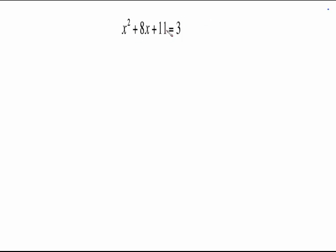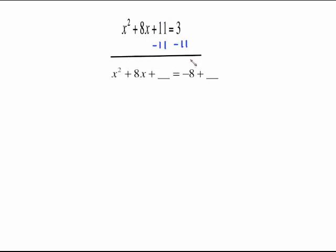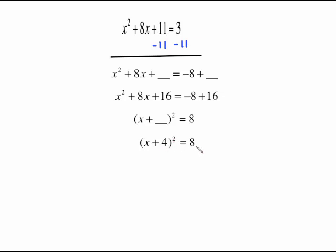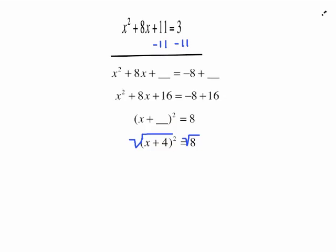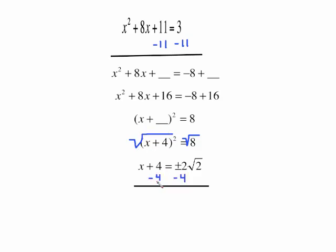This is definitely not a perfect square trinomial. You have positive 11 at the end, so get rid of it by subtracting 11 from both sides, giving negative 8 on the right. Now: x squared plus 8x plus blank equals negative 8 plus blank. Half of 8 is 4, and 4 squared is 16, so add 16 to both sides. Simple arithmetic: negative 8 plus 16 is 8. We squared 4 to get 16, so this is x plus 4 squared equals 8. Take the square root of both sides. Square root of 8 breaks into 2 times 2 times 2 — pair of 2's comes out, giving plus or minus 2 radical 2. Subtract 4 from both sides for the final answer: negative 4 plus or minus 2 radical 2. You have two answers: negative 4 plus the radical and negative 4 minus the radical.